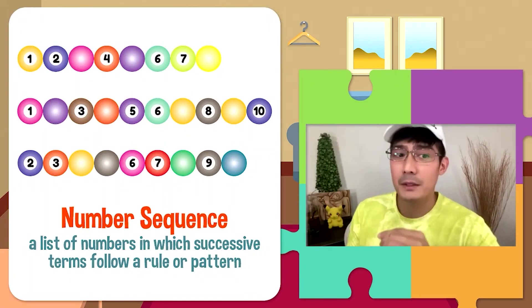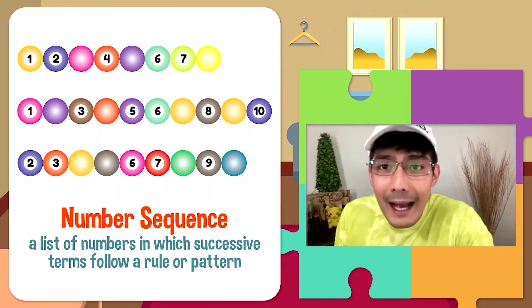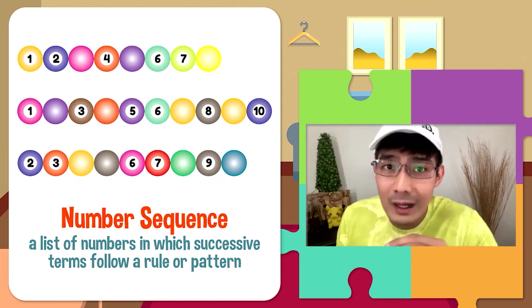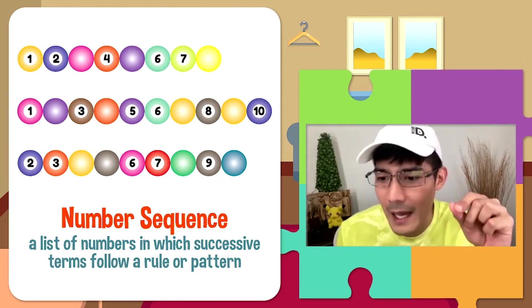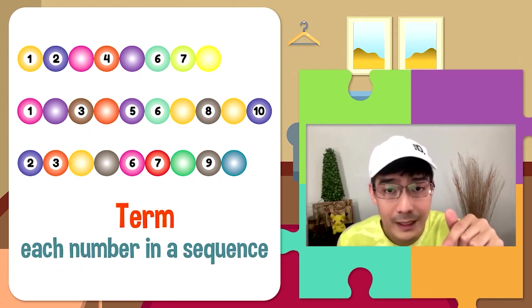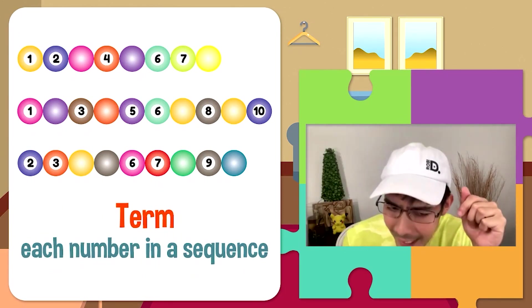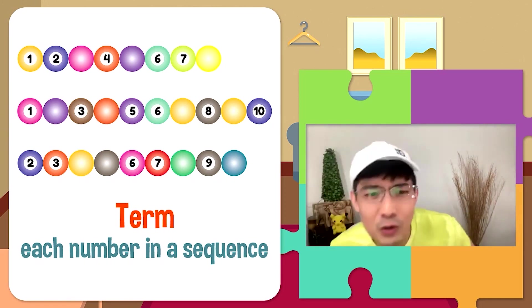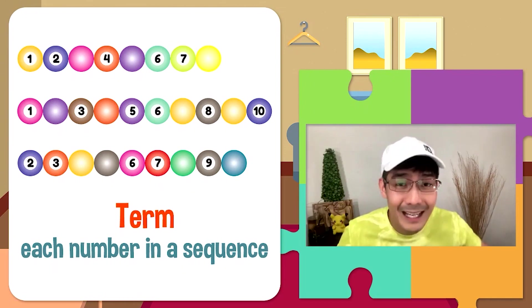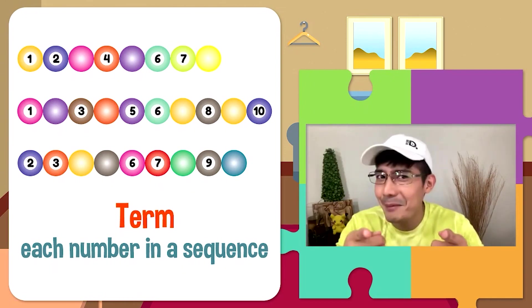Sabay-sabay tayong matuto dito sa Math the League. Natatandaan nyo ba kung ano yung number sequence? Ang number sequence ay yung listahan of numbers kung saan yung pagkakasunod-sunod ng mga ito ay sumusunod sa isang tiyak na rule or pattern. Ang mga numbers sa sequence ay tinatawag na term. Ngayon na may idea na tayo kung ano ang lesson natin for today, ready na ba kayong sumama sa adventure natin at i-apply yung mga natutunan natin?